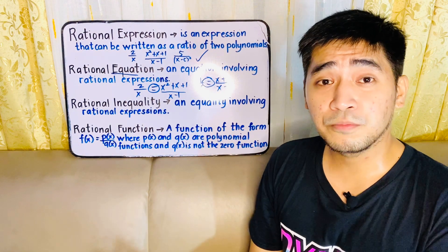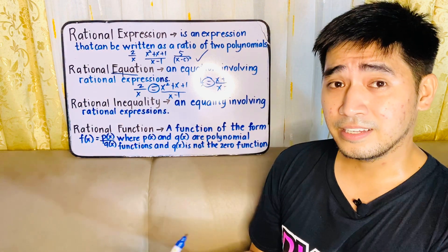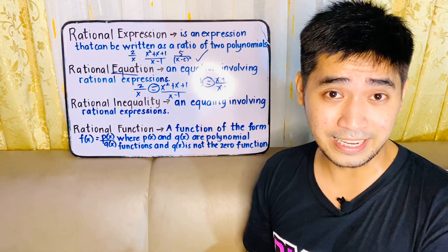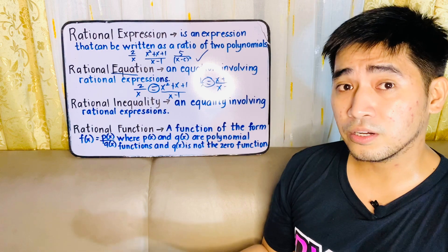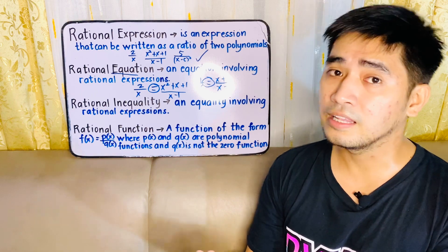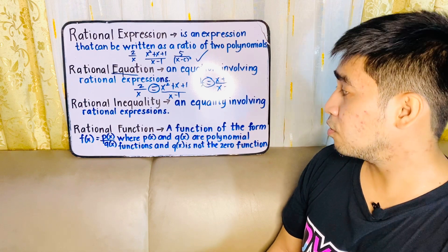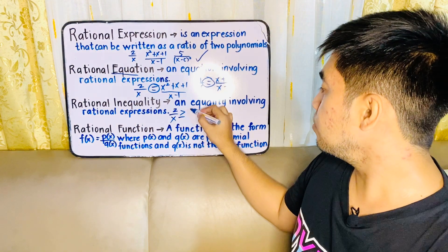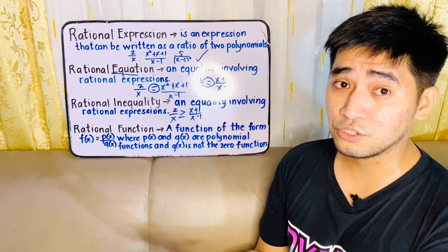What if we do not anymore use an equal sign? What if we have less than, greater than, less than or equal to, or greater than or equal to? Therefore, we are pertaining to rational inequality. The left side and the right side will not anymore be equal because of the word inequality. For example, 2 over x is less than or equal to x plus 1 over x minus 1 — this is a rational inequality.